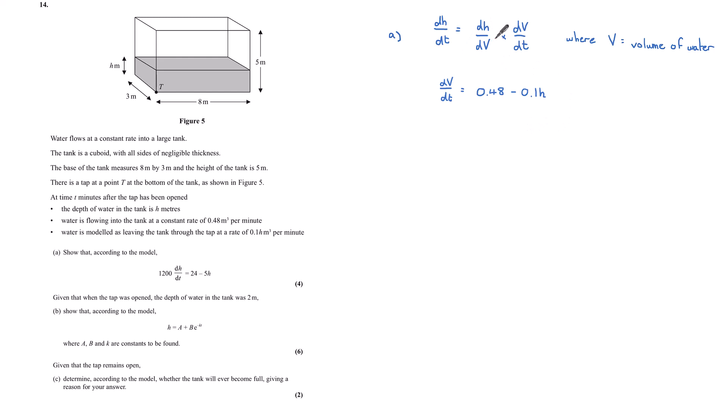Now, I need my dh by dv. I'm letting v be the volume of water. Coming back to the diagram, I can see the volume of water in this tank is going to be 8 times 3 times h, which is 24h. Given I now have v in terms of h, I can find dv by dh by differentiating this. 24h differentiates to 24. I have dv by dh. I have dv by dt. Now I can write an expression for dh by dt.